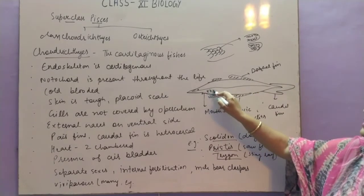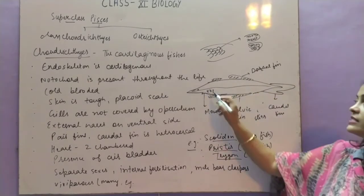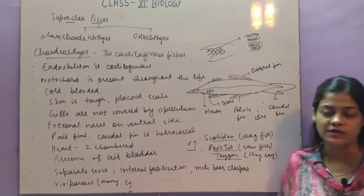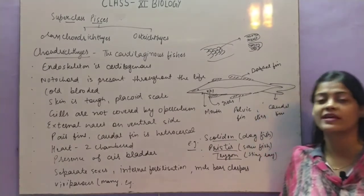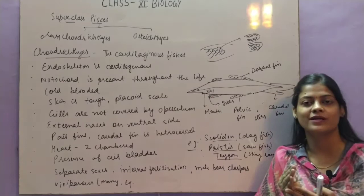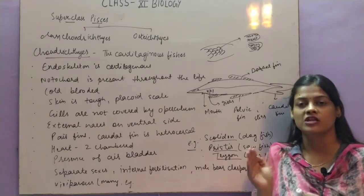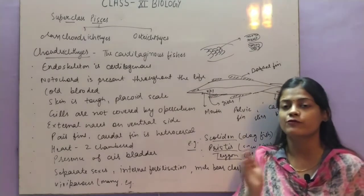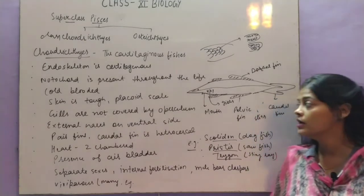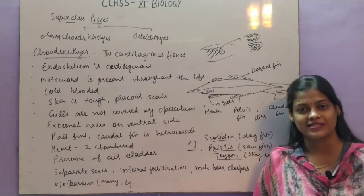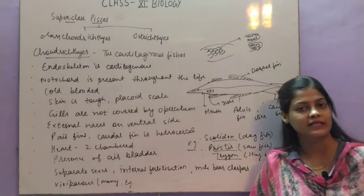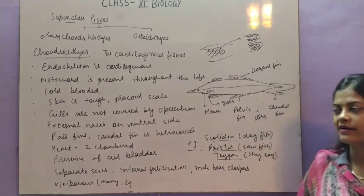The gills are visible. In some fishes the gills are not visible because there is a skin-like fold structure over them called the operculum. But operculum is not present in Chondrichthyes. The gill slits are clearly visible through which they can respire.